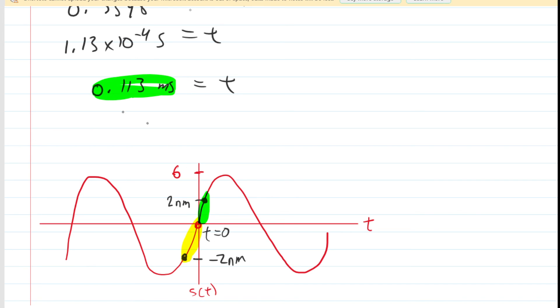So if we double this time, then we would get our answer. So by doubling the time, we will get 0.227 approximately. That is in milliseconds. That is the time required to go from a position of negative 2 nanometers to positive 2 nanometers, and that is the correct answer to the question.